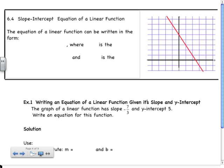The slope-intercept equation of a linear function — the equation of a linear function can be written in the form y is equal to mx plus b, where m is the slope of the line, and b represents the y-intercept.